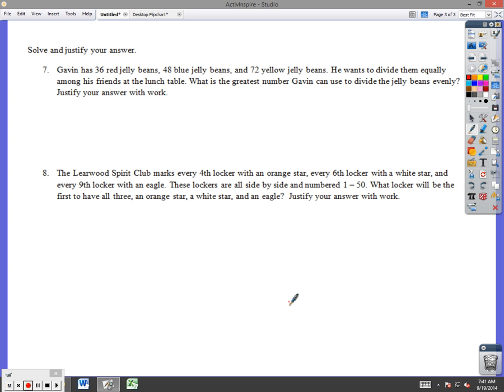Okay, let's take a look at the last two. I'm going to do all the work down here for this one, and then I'll transfer the answer. Gavin has 36 red jelly beans, 48 blue jelly beans, and 72 yellow jelly beans. He wants to divide them equally among his friends. What is the greatest number Gavin can use to divide the jelly beans evenly? Justify your answer with work. Key word here is greatest number. So, if he takes 36, 48, and 72, what's their greatest number or greatest common factor? So, what's the most jelly beans of every color he can give to his friends?